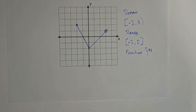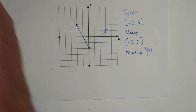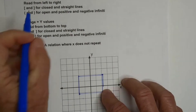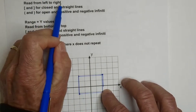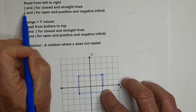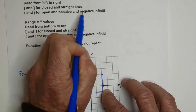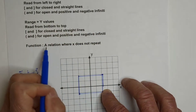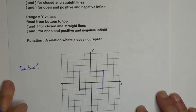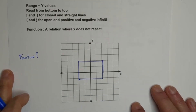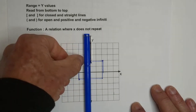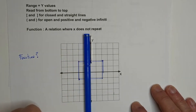To summarize: the domain is your x values — read from left to right, use brackets for closed and straight lines, and parentheses for open and positive and negative infinity. The range uses the same rules for y values. A function is a relationship where x does not repeat. For instance, if you had a circle shape, it would not be a function because it hits at two locations. I hope that was helpful.